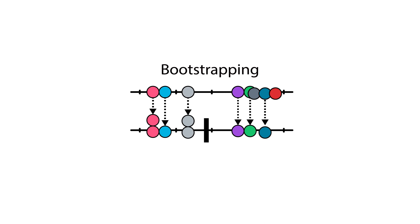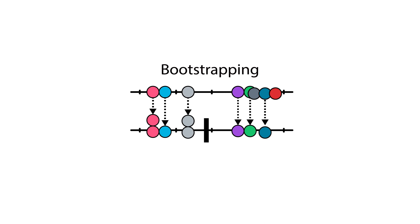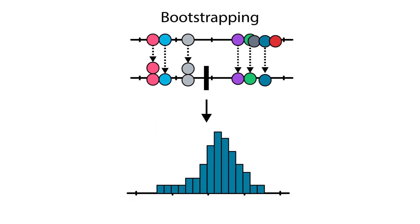Alternatively, we could use bootstrapping, which allows us to not assume any formal distribution at all. Bootstrapping allows us to simulate from the original data set directly — we don't have to find a mathematical function that would represent the data first.